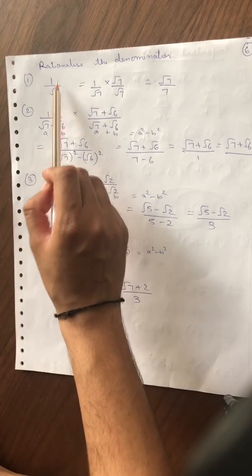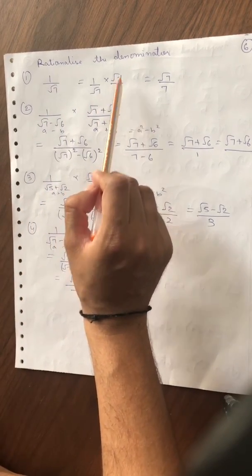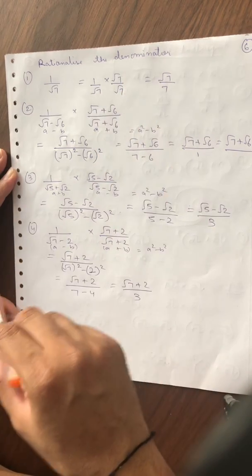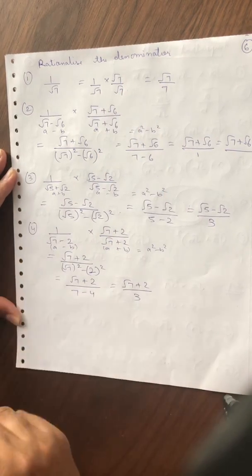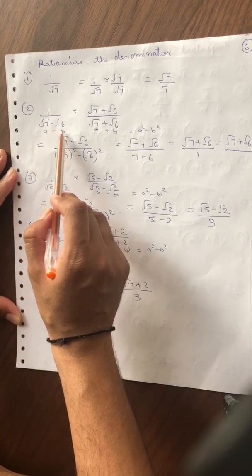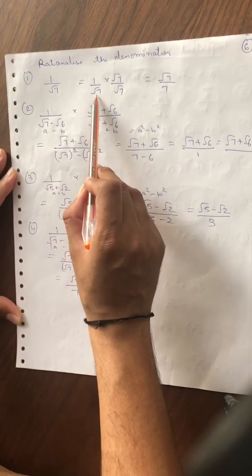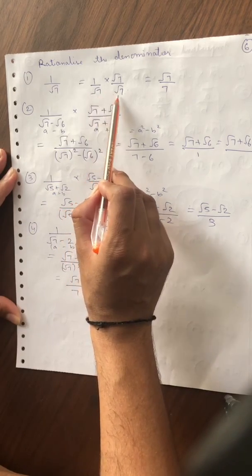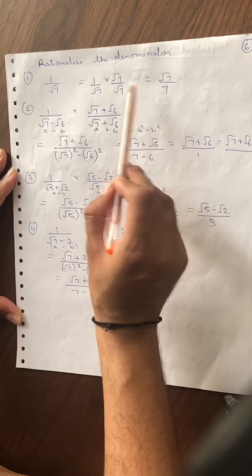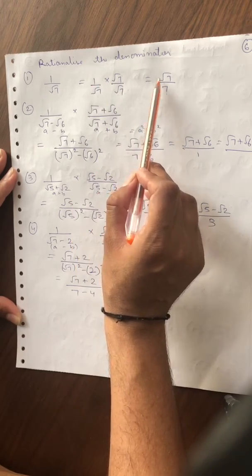तो पहला sum है 1 upon √7। दोनों को √7 से numerator और denominator को multiply करेंगे। Root 7 into root 7 क्या होता है — root 7 का square मतलब 7 हो जाएगा, और root 7 into 1 क्या हो जाएगा — root 7। तो answer आएगा root 7 upon 7।